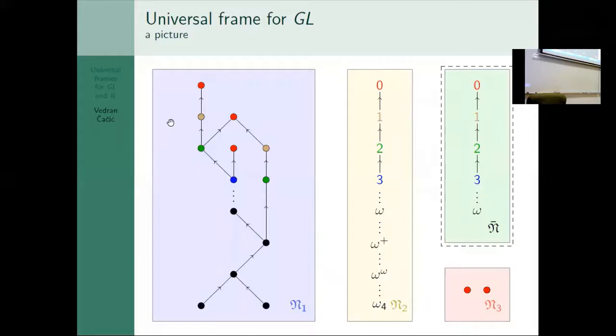Here are some pictures. This is some very complicated GL frame. The worlds are colored by depth - red worlds are depth zero, brown worlds are depth one, green worlds are depth two, and blue worlds are depth three. The black worlds are of infinite depth. We see here is some infinite chain between this blue and this black world. Here is the universal frame, so it has one red zero, one black ordinal one, one green ordinal two, one blue ordinal three, and one black ordinal omega. The correspondence is obvious. It's not a proof but it's almost a proof.